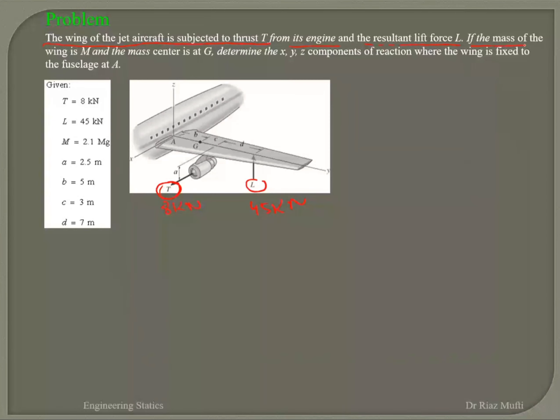If the mass of the wing is M, which is acted at this point, that is the G point, and it's 2.1 mega, sorry, and the mass center is located.